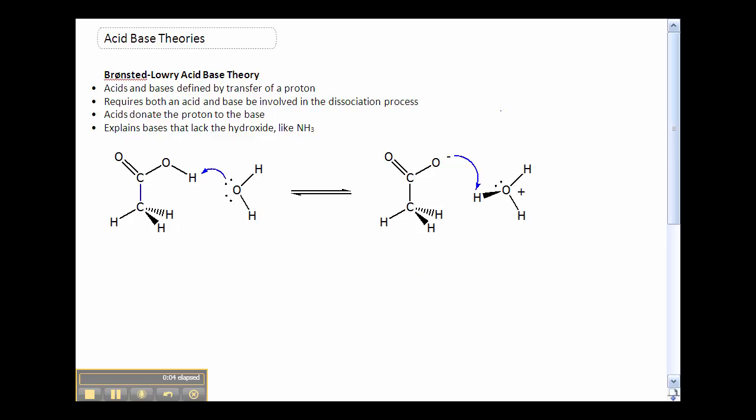Brønsted-Lowry acid base theory is a little bit different than the Arrhenius theory we talked about in class. The main difference is that the definition of acid base includes a proton transfer. Because it's going to be a transfer of a proton, we need two species, an acid and a base, at all times. We can't think of them as alone. The definition will be: an acid is something that donates the proton.